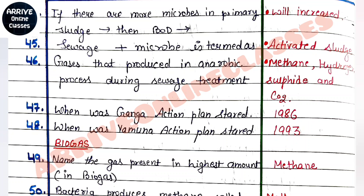The 44th question is: if there are more microbes in primary sludge, then what happens to BOD? If there are more microbes in primary sludge, then the BOD value will obviously increase, because more microorganisms means more oxygen will be required to consume them.